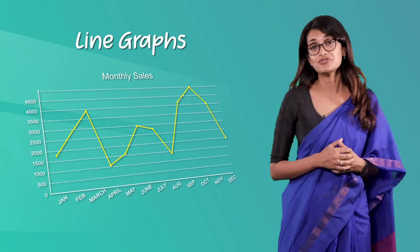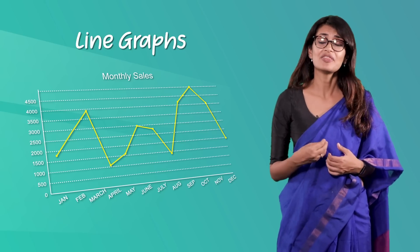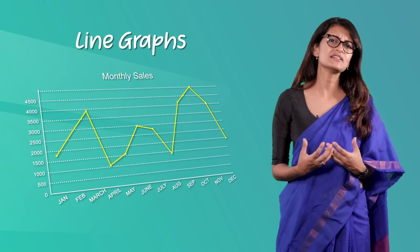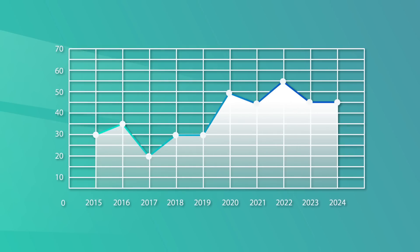Line graphs represent how data has changed over time. This type of chart is especially useful when you want to demonstrate trends or numbers that are connected — for example, how sales vary within a year. This type of chart converts information into points on a grid that are connected with a line to represent trends, changes, or relationships between objects, numbers, dates, etc.